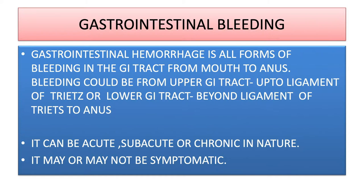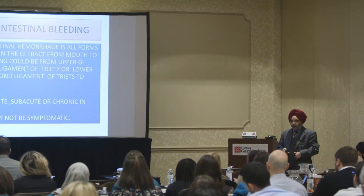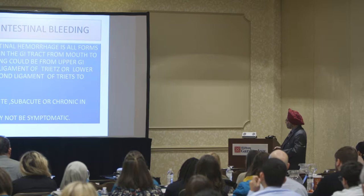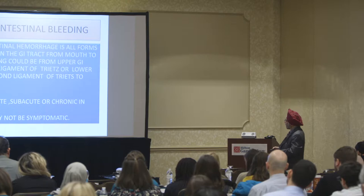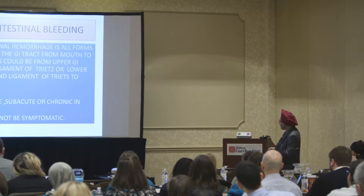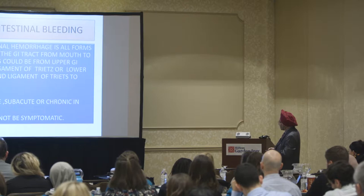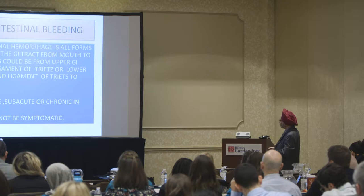Gastrointestinal bleeding or hemorrhage refers to all forms of bleeding in the GI tract from the mouth to the anus. Bleeding can be from the upper GI tract up to the ligament of Treitz, or lower GI tract beyond the ligament of Treitz to the anus. The ligament of Treitz is a small muscular ligament attaching the fourth part of the duodenum to the crus of the diaphragm — it is the landmark separating upper from lower GI tract, very clearly visible during surgical dissection. GI bleeding can be acute, subacute, or chronic in nature, and may or may not be symptomatic.